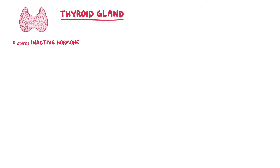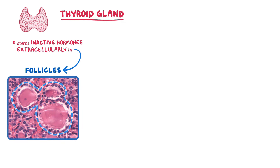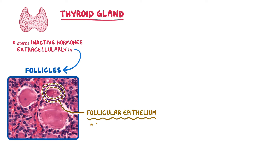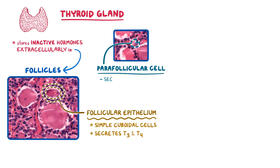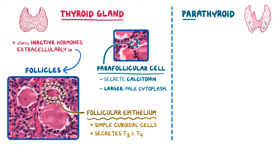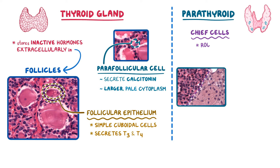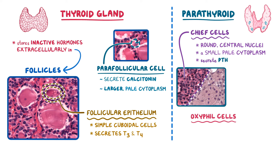As a quick recap: the thyroid is unique because it stores inactive hormones extracellularly in colloid follicles that stain pink with H&E. The follicular epithelial cells are simple cuboidal cells responsible for secreting T3 and T4 when needed. The parafollicular cells, or C-cells, secrete calcitonin and have a larger, pale cytoplasm. The parathyroid consists mostly of glandular chief cells that have round central nuclei and a small, pale cytoplasm — these are the only cells that secrete PTH. The oxyphil cells are noticeably bigger due to their larger eosinophilic cytoplasm.